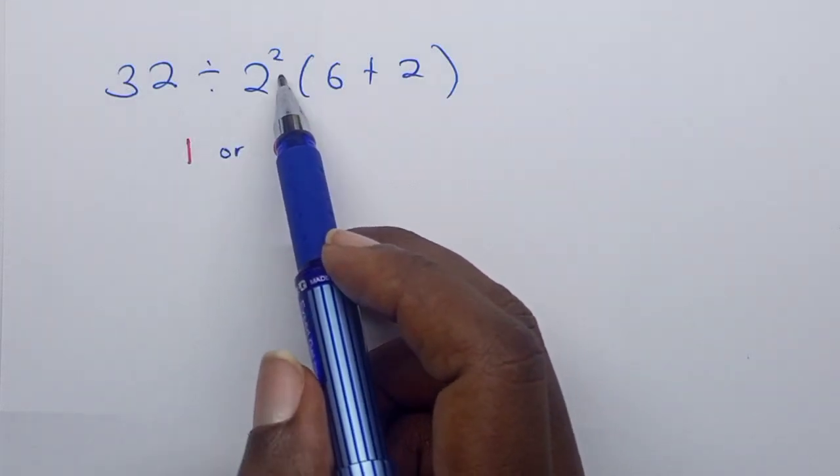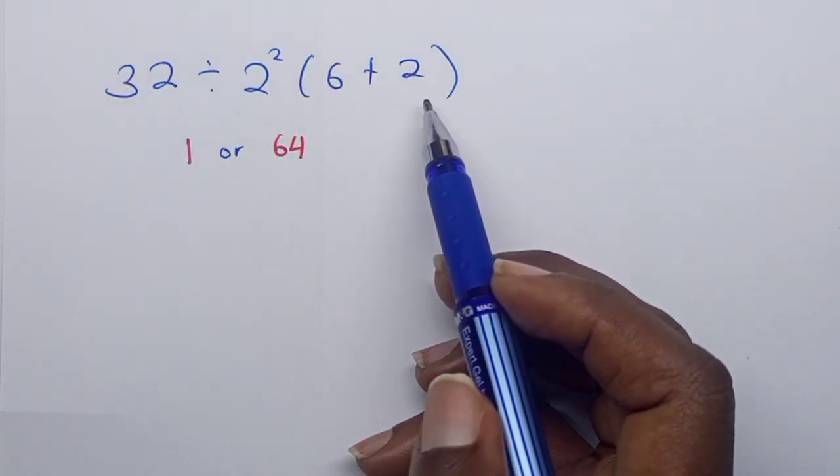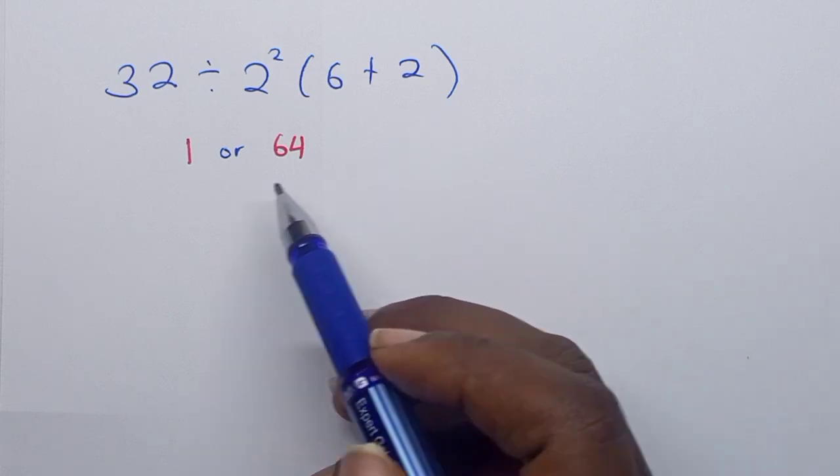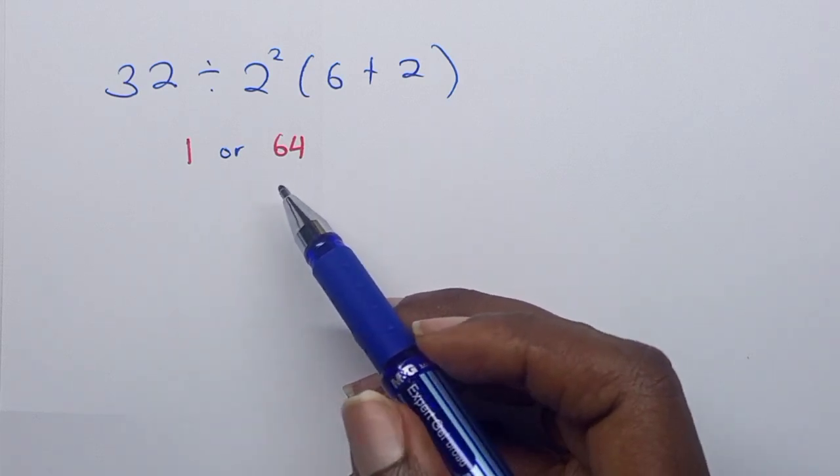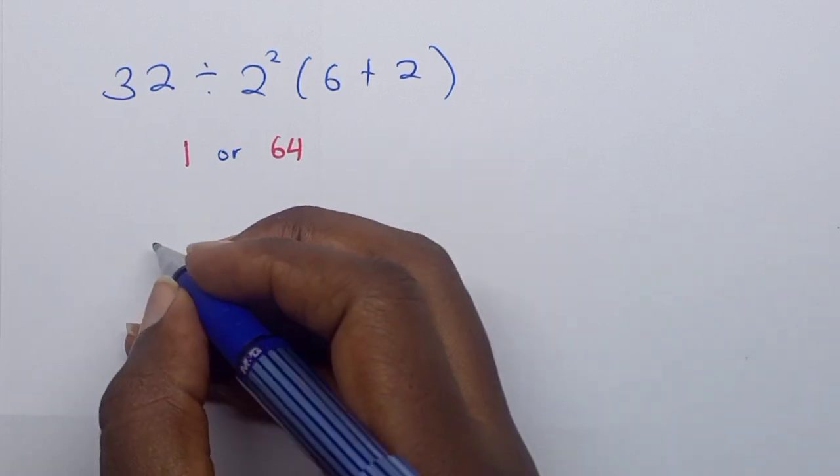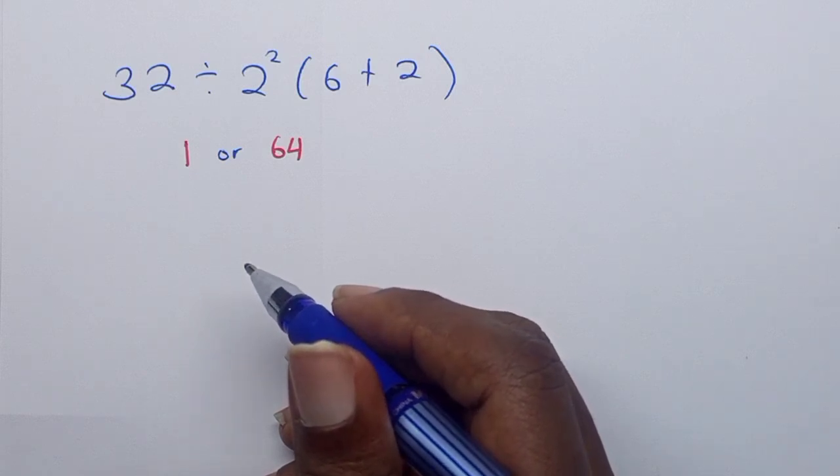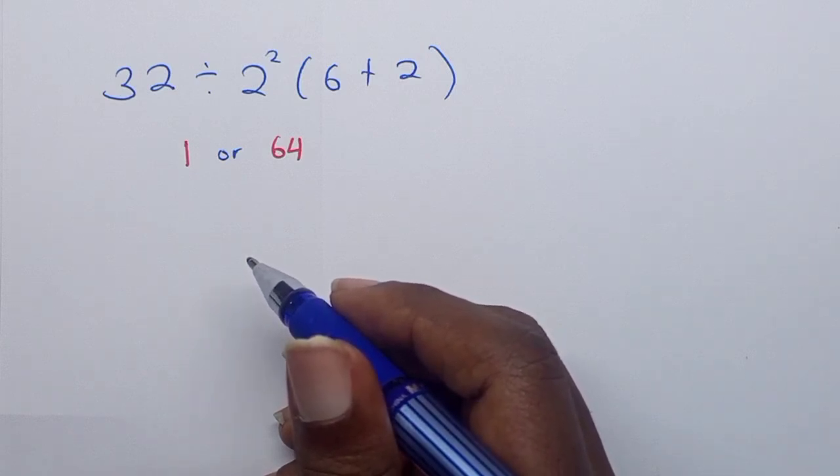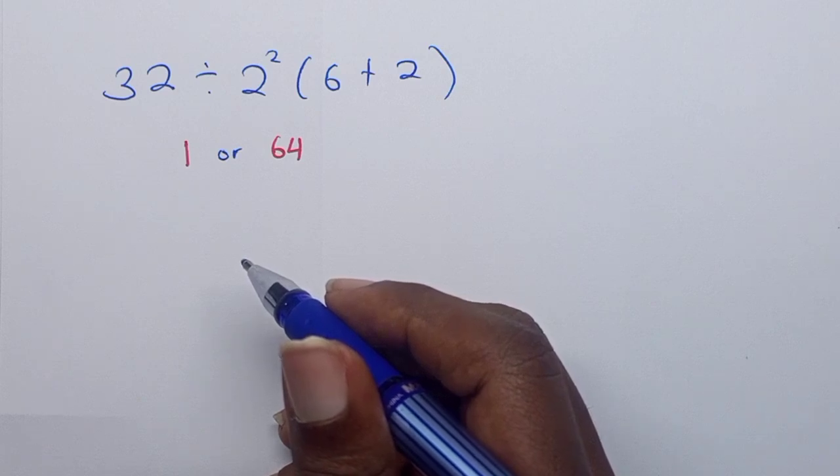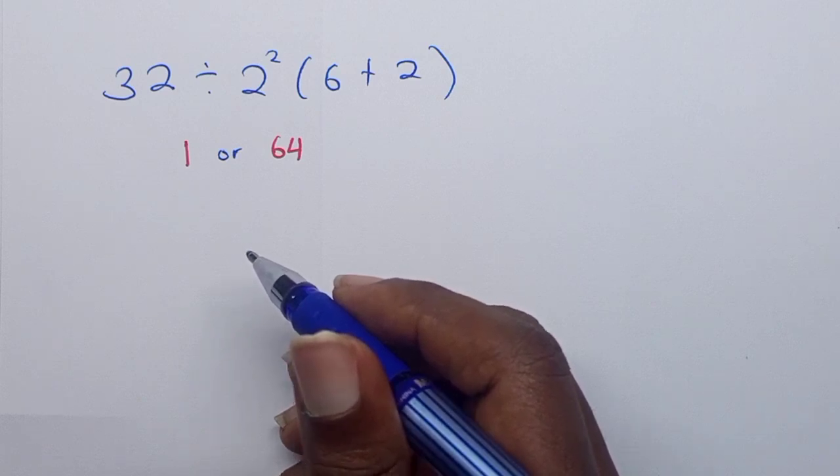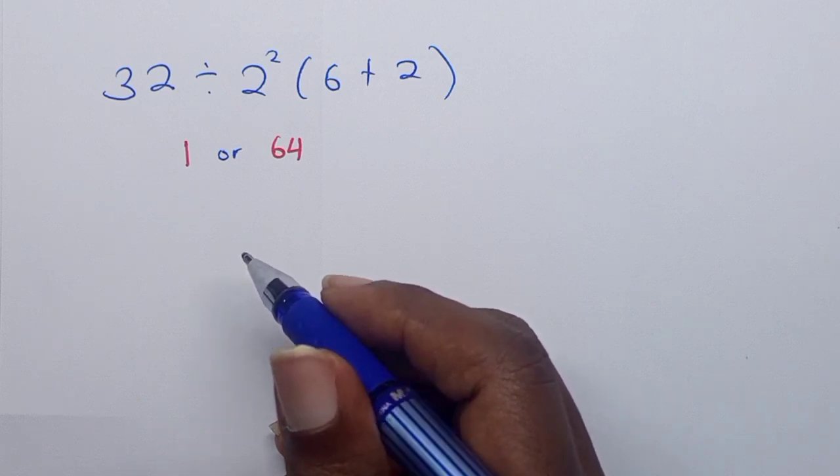32 divided by 2 squared times 6 plus 2. What is it equal to? Is the answer 1 or is the answer 64? Let's try solving it. Before we do, kindly let us know what you think the answer is in the comment section down below. Pause the video, work it out, and then comment your answer.